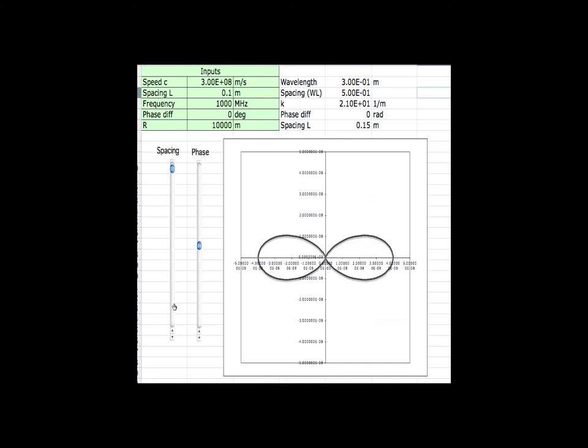There we go, because it gets closer and closer to 180 degrees from the other direction, it does the same thing. Well, let's move this back to zero again. It's right about, let's see, let's get it close to zero. It's right at zero. Let's change the spacing, so now we have two side lobes. See what happens.